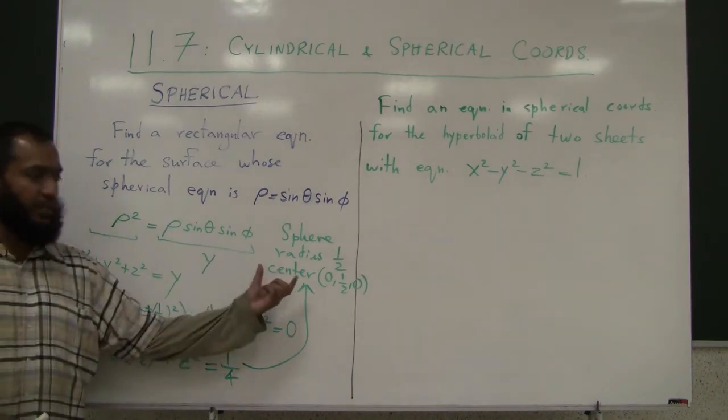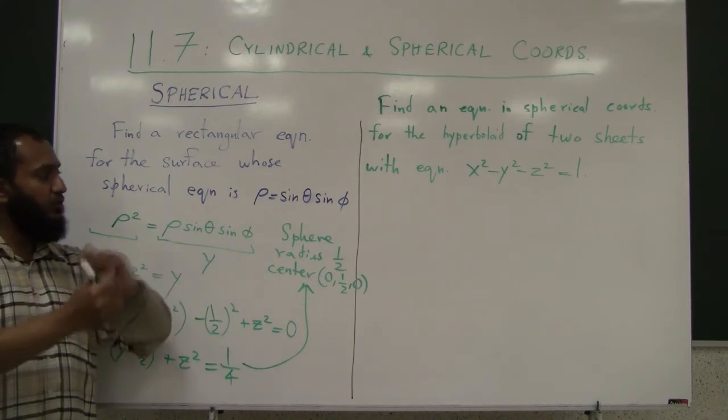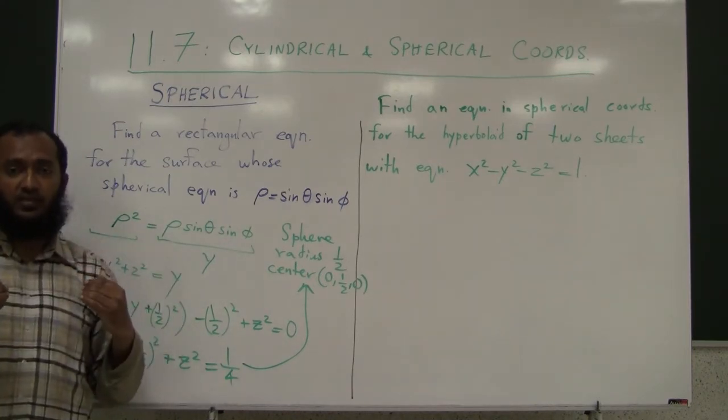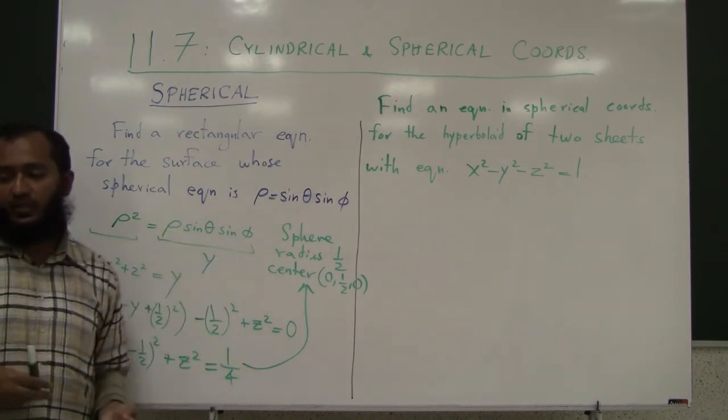So what is this? This is a sphere, radius 1/2, and center (0, 1/2, 0). All right, so again, let's recap here. Basically, I give an equation which relates the ρs, φs, and θs, try to see how you can get those in terms of x, y, z, and remembering the relationships that x, y, z have with these three quantities.